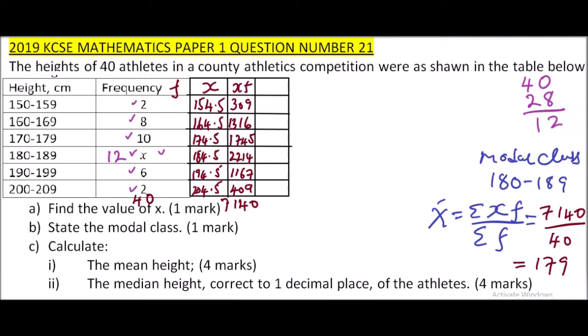The other part remaining is finding the median height correct to one decimal place. With that, we fill the column of cumulative frequency. Cumulative frequency, you add up the frequencies. So we have two, two plus eight gives you ten, ten plus ten gives you twenty, twenty plus twelve gives you thirty-two, then you add six you get thirty-eight, then you get to forty.